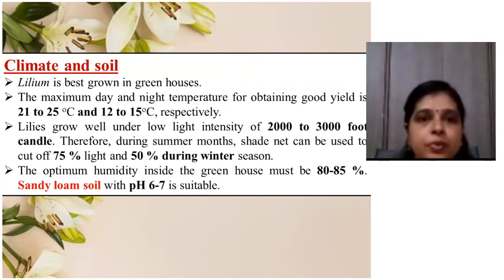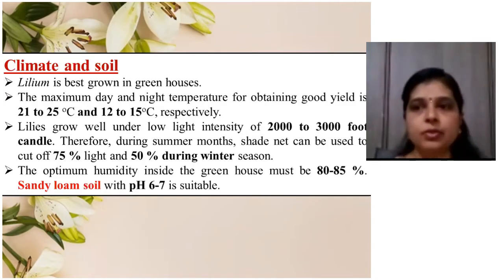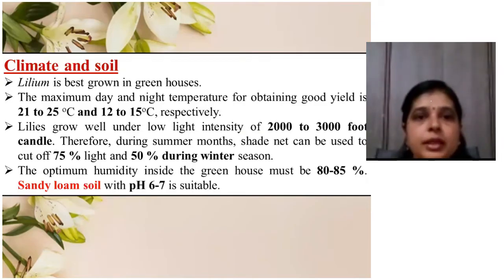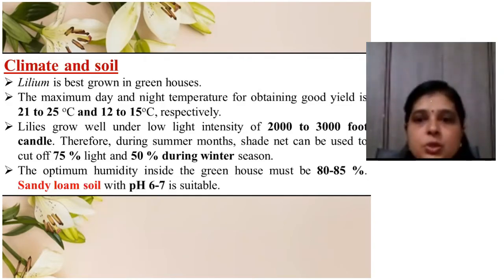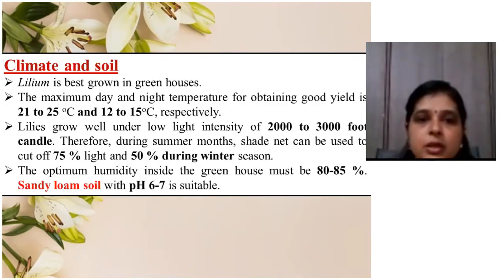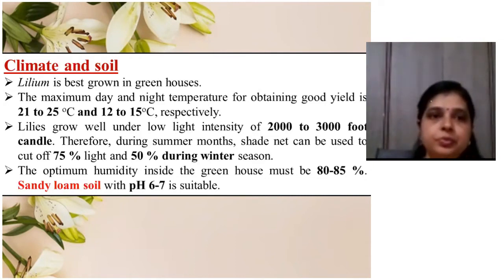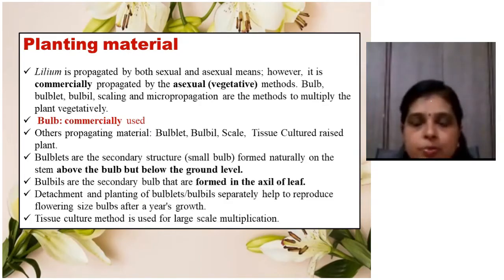Regarding climatic conditions and soil suitable for lilium cultivation: lilium is mostly grown in greenhouses as protected cultivation. The day temperature requirement is 21 to 25 degrees Celsius. Low light intensity is beneficial, so shade net can be used. Relative humidity should be around 80 to 85 percent. Sandy loam soil with pH 6 to 7 is most suitable.